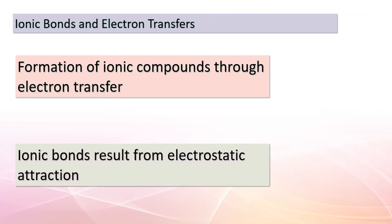As we proceed, we're going to discuss a crucial concept: ionic bonds and their connection to electron transfers. The transfer of electrons between atoms leads to the formation of ionic compounds. These compounds, like aluminum bromide, are held together by strong electrostatic attractions. This bonding results in fascinating properties such as high melting and boiling points, as well as solubility in water. This example beautifully showcases the intricate dance of electrons and their influence on chemical reactions.